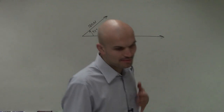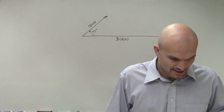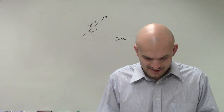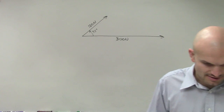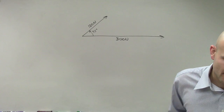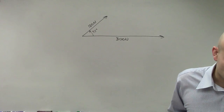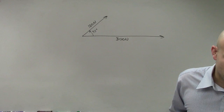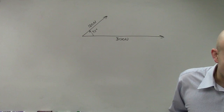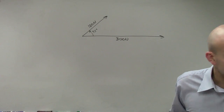Ladies and gentlemen, this word problem states: forces with magnitudes of 125 newtons and 300 newtons act on a hook. The angle between the two forces is 45 degrees. Find the direction and magnitude of the resultant of these forces.